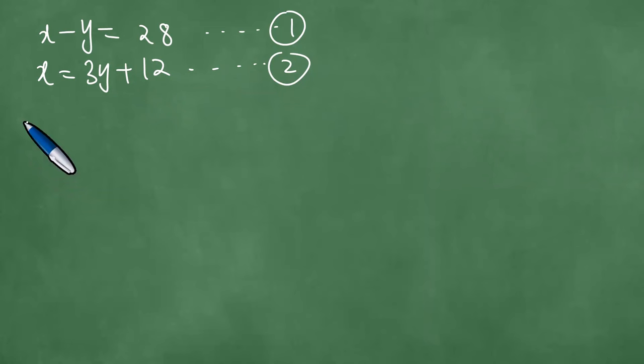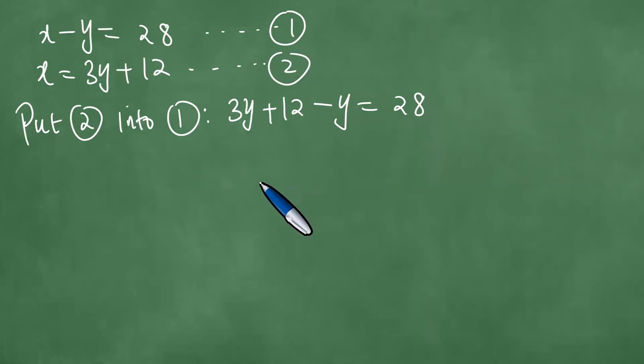Now we can put equation 2 into equation 1. If you put equation 2 into equation 1, we obtain in the place of x, we put 3y plus 12. So we're going to put 3y plus 12 minus y equals 28. And now 3y minus y gives us 2y equals 28 minus 12 gives us 16. Dividing both sides by 2 gives us 8. And we have that y equals 8.